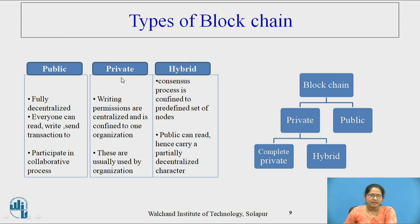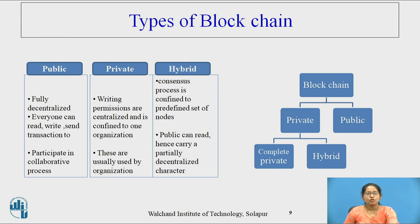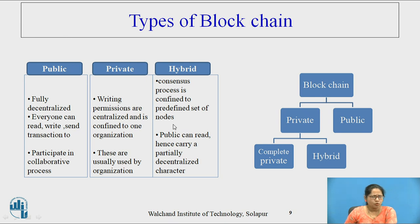In private blockchain, it is under some organization. One organization has authority and writing permissions are centralized and confined to that one organization. These are usually used by organizations. Hybrid blockchain is a mixture of public and private — for some it acts as private, for others as public. The consensus process is confined to a predefined set of nodes, some nodes are public and some are private, and public nodes can read, giving it a partially decentralized character.